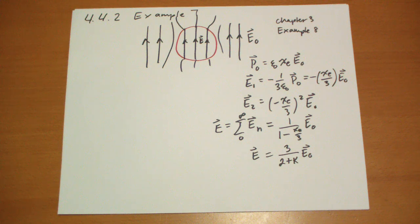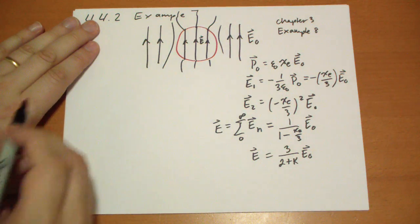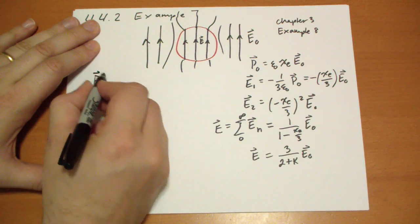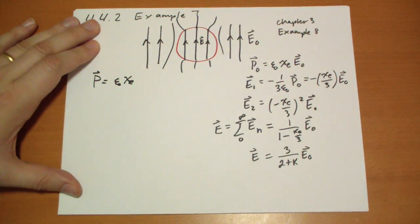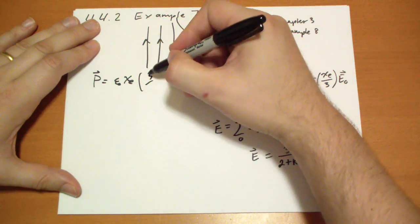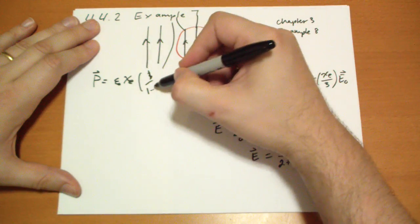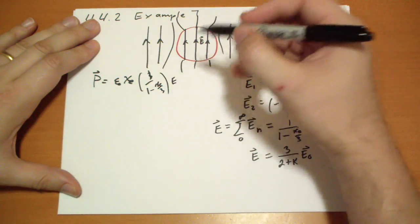And if you're not happy with that solution, then what we can do is we can say, what's the resulting polarization from this electric field? So let's calculate that. So the polarization is going to be ε₀ χₑ times the electric field we just calculated, 3 over, let's do 1 over 1 minus χₑ over 3 times the original electric field.